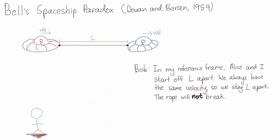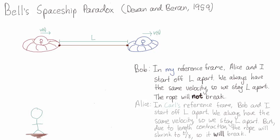Now Alice had a different idea. She said, let's look at things in Carl's reference frame. So Bob and I start off a distance L apart. And we always have the same velocity. So from Carl's point of view, we will stay a distance L apart. However, due to length contraction, the rope should shrink to a size L/gamma. So as we go very fast, the rope should break. Who do you agree with?